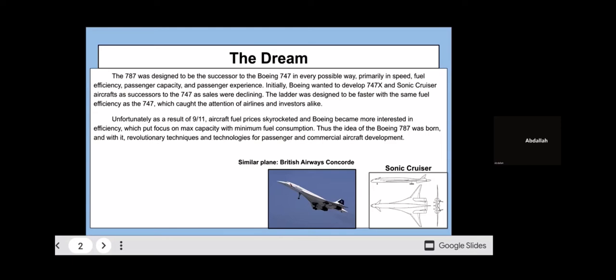However, as a result of 9/11, aircraft fuel prices skyrocketed and every company was just more interested in having a big plane that used as little gas as possible to move people forward. That's when the 787 was announced to be developed in the year 2003.